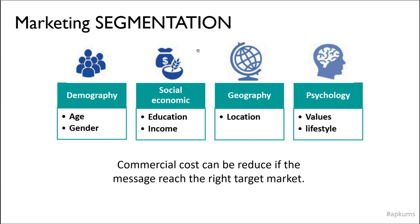This is marketing segmentation. The first is demographic — you focus on age or gender. For example, if you are selling tudung for Muslim women, you need to know the age of your target market — whether teenager or adult. The second is social economic, which is based on their income level. You need to know the education level and income level of your customers.